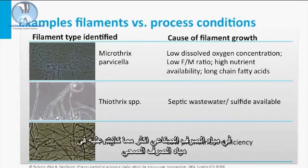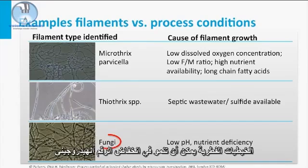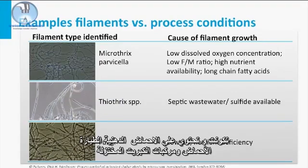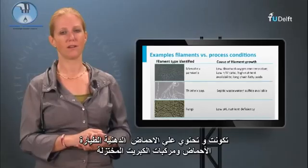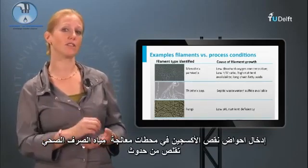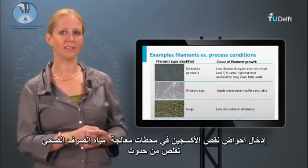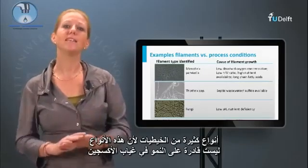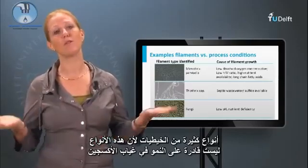Fungal hyphae can grow at low pH. Filamentous sulfide oxidizers, such as Thiothrix, especially grow on septic wastewaters that are pre-fermented and contain volatile fatty acids and reduced sulfur compounds. The introduction of anoxic tanks in sewage treatment plants also diminished the occurrence of many types of filaments, since these species are not able to grow in the absence of oxygen.